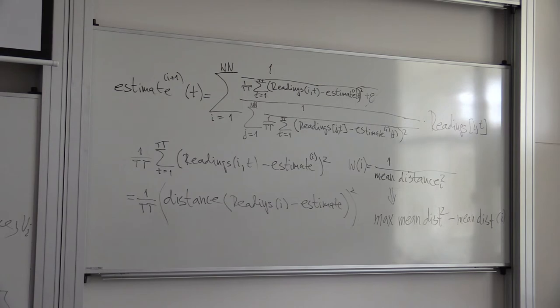Instead of using a reciprocal of mean distance squared, instead of that, they propose max mean distance, distance either squared or not squared. There are several versions. Minus mean distance of I sensor. So this is the weight of sensor I here. You take simply...